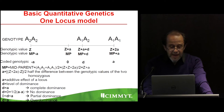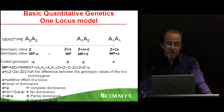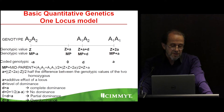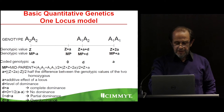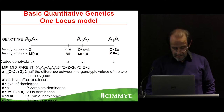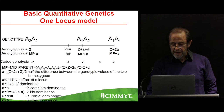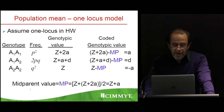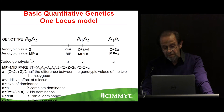So A is the additive effect of one locus, and D is the level of dominance. If you remember that the genotypic value of the homozygous is minus A, the heterozygous is D, and the other homozygous is A, you will remember how to calculate the breeding value. I am showing this in order to arrive at how we calculate the breeding value based on genotypic values and allele frequency.